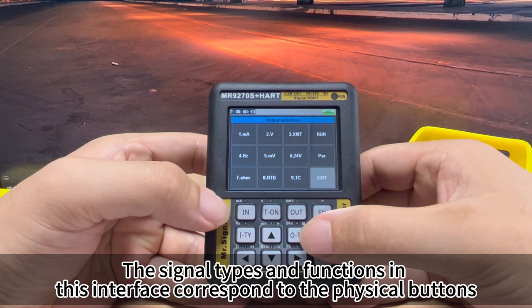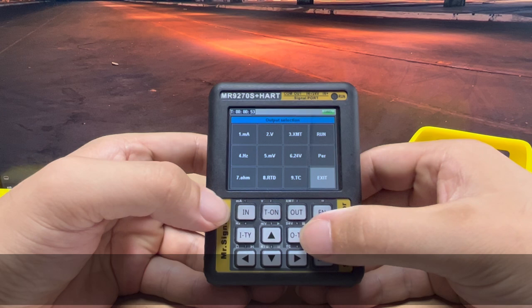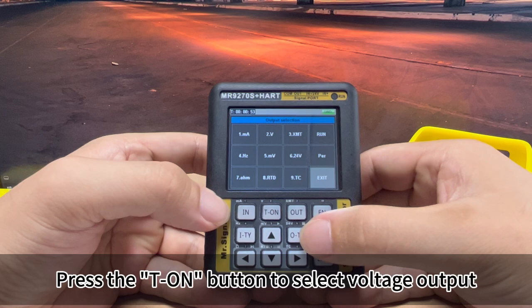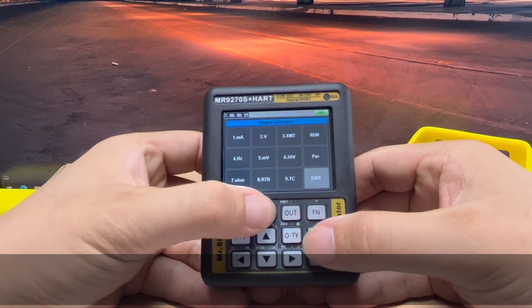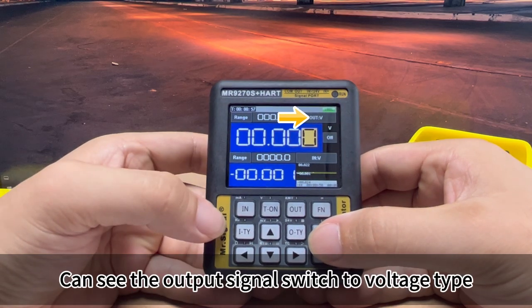The signal types and functions in this interface correspond to the physical buttons. Press the T-ON button to select voltage output. You can see the output signal switch to voltage type.